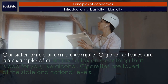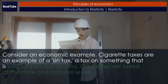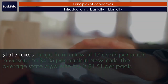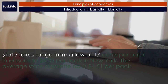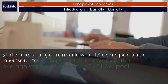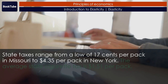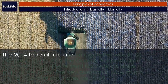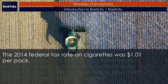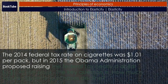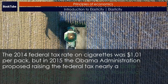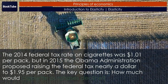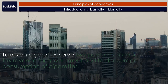Consider an economic example: cigarette taxes are an example of a sin tax — a tax on something that is bad for you, like alcohol. Cigarettes are taxed at the state and national levels. State taxes range from a low of 17 cents per pack in Missouri to $4.35 per pack in New York. The average state cigarette tax is $1.51 per pack. The 2014 federal tax rate on cigarettes was $1.01 per pack, but in 2015 the Obama administration proposed raising the federal tax nearly a dollar, to $1.95 per pack.